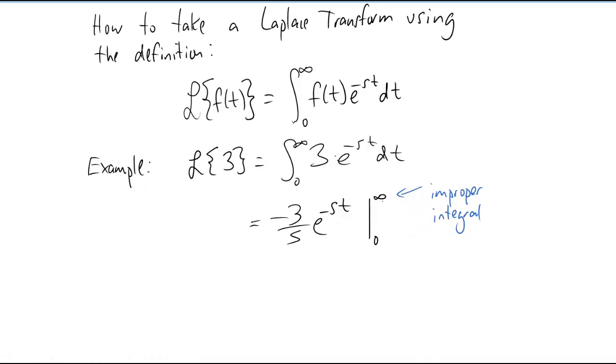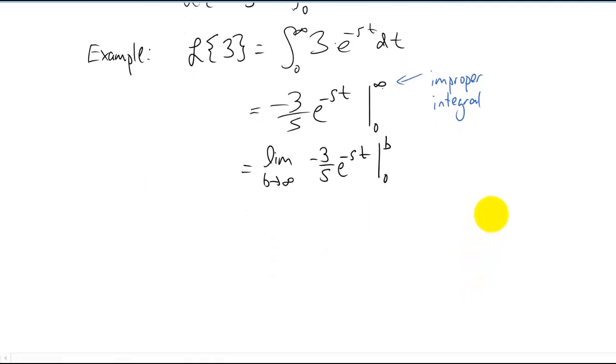And the technical way to do an improper integral is to replace that infinity with a constant. We'll call it b in this case. We're going to take a limit of this as b goes to infinity. Now I'm going to plug in my limits b and zero and we can simplify, make this look a little bit prettier. And the question now is, what is the limit as b goes to infinity of this function right here?